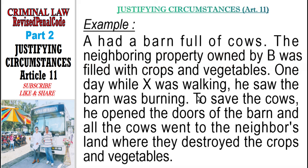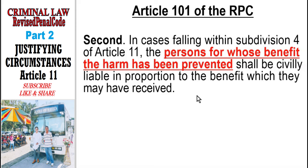Example: A's barn containing cows was on fire. On the adjoining property of B were planted vegetables. X, who saw the fire, opened the barn. The cows went to B's property and destroyed the vegetables. Who is civilly liable? Not X who opened the barn, but A — the owner of the cows — because under Article 101, the person who benefited is civilly liable. If the barn had not been opened, all of A's cows would have burned. Since A benefited, he is the one civilly liable.